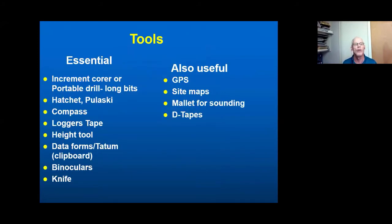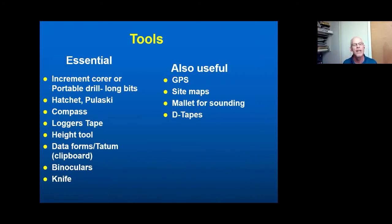A couple of other points on tools: I'll be talking about making a map in the next few slides. For that purpose, a compass and a logger's tape — which for non-forestry people is just a long measuring tape that recoils automatically — can be used easily for measuring distances on the ground and for taking tree diameters. I'll get into tools more when we start talking about decay detection.